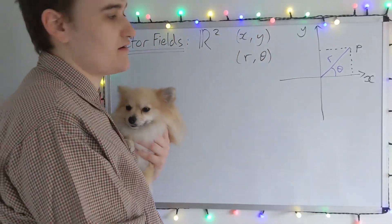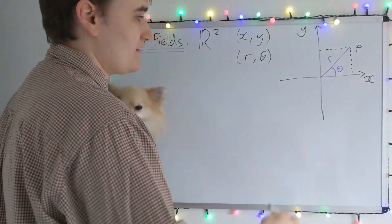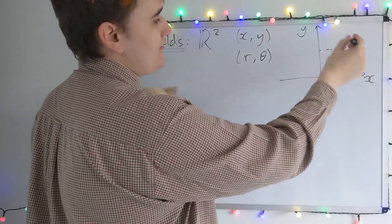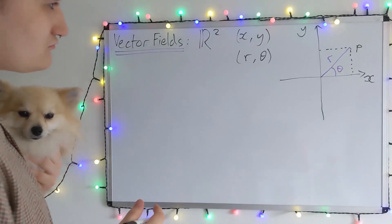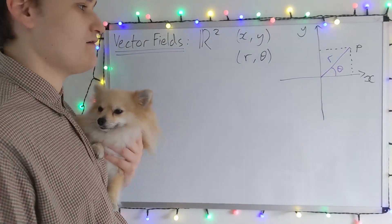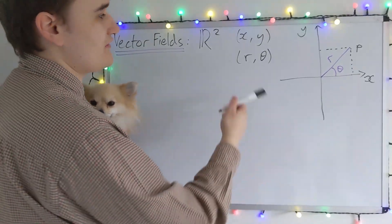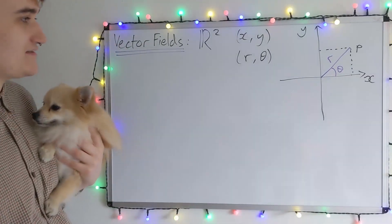And now the xy chart coordinate lines are just the straight horizontal and vertical lines. Whereas the r and theta, we have our radial lines and then the circles of constant radius. So we would expect now any kind of vector field that we define is going to have a very different representation in these two coordinate systems.